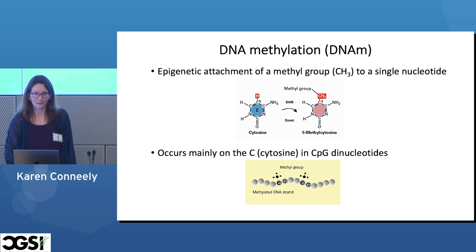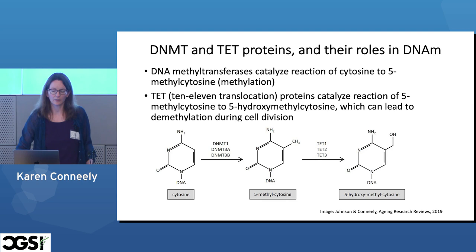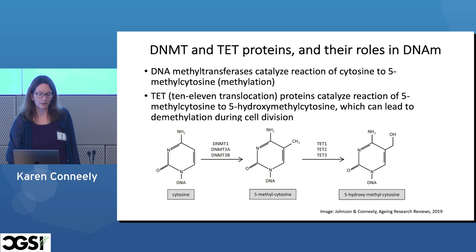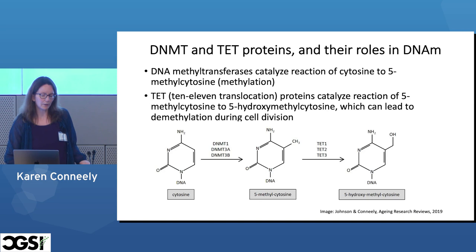The methyl groups are attached through a reaction catalyzed by a family of proteins called DNA methyltransferases. There are three main DNA methyltransferases. DNMT1 is generally responsible for maintenance methylation: when a cell divides it makes sure that the methylation patterns are faithfully passed on to its daughter cells — this is called mitotic inheritance. The other two, DNMT3A and 3B, are responsible for de novo methylation, the addition of methyl groups that weren't there before, and which one is important seems to vary depending on context.